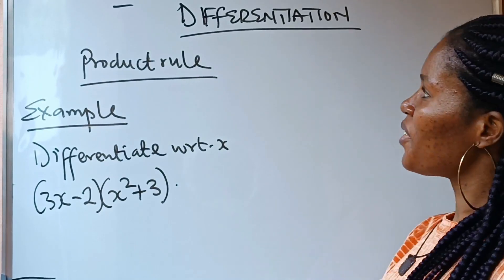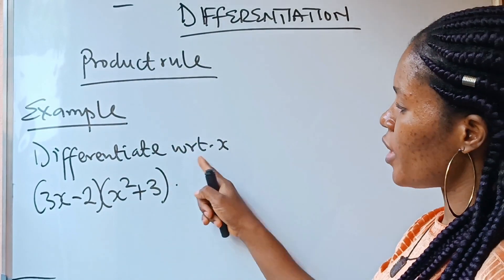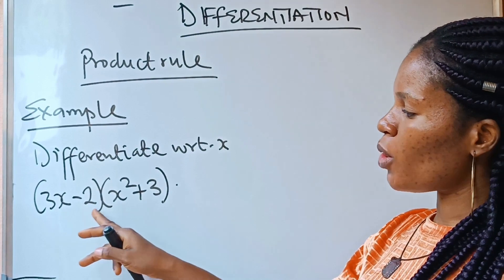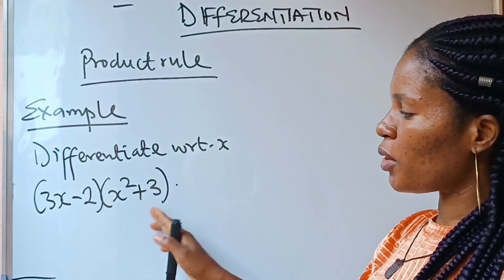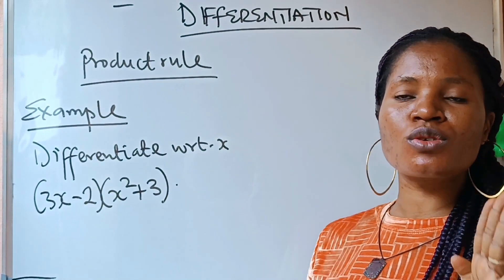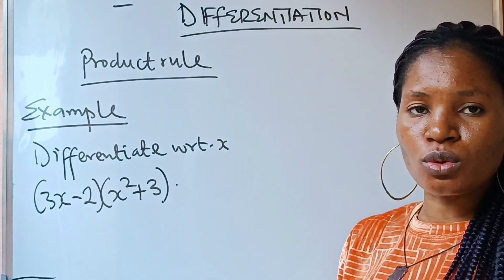Welcome to my channel. You are asked to differentiate with respect to x: 3x minus 2, bracket x squared plus 3. You are going to do this using the product rule.